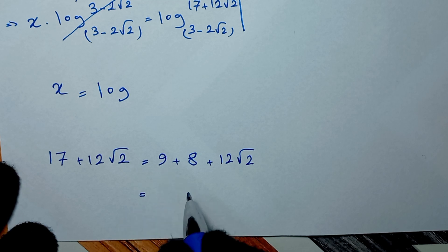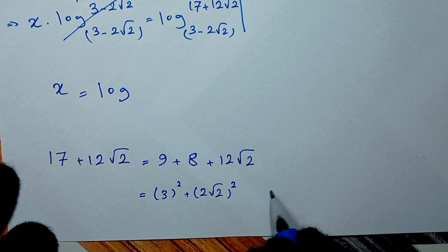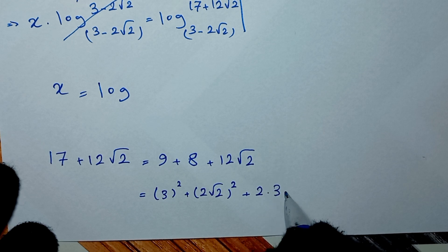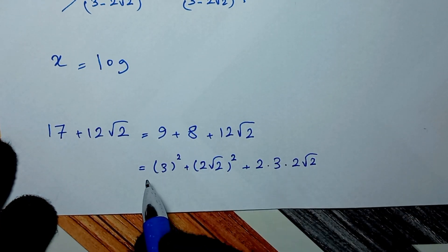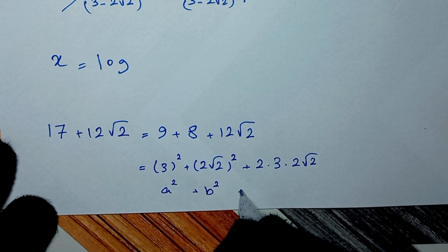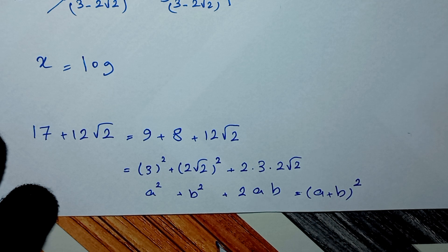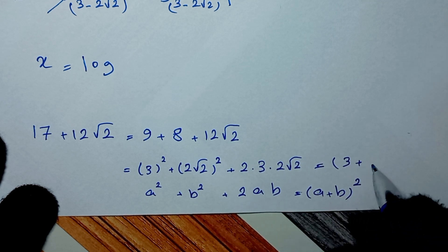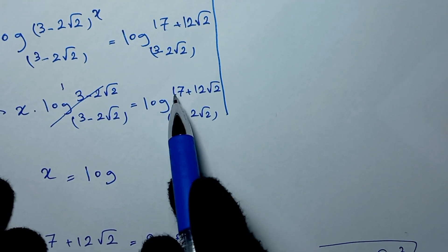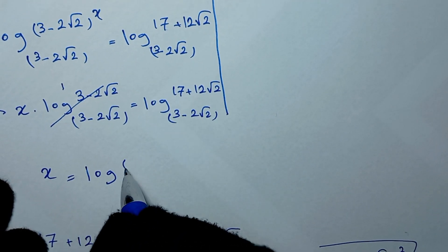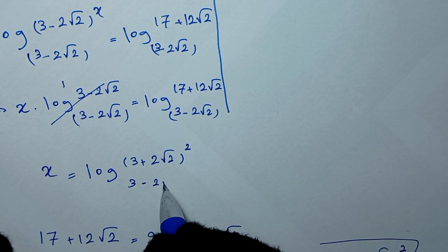We can write 17 + 12√2 by recognizing that 17 = 9 + 8 = 3² + (2√2)², and 12√2 = 2·3·2√2. This fits the form a² + 2ab + b² = (a + b)², so 17 + 12√2 = (3 + 2√2)².